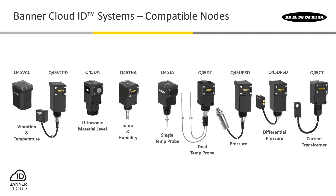First off, we have our vibration and temperature nodes that monitor the health and performance of motors, pumps, and similar equipment with rotating motion. We have two form factors that are most notable: an all-in-one version that incorporates the sensing element and the radio into one succinct package, and a tethered version which allows you to place the sensing element into locations where the axis orientation is better served with a compact sensing element.